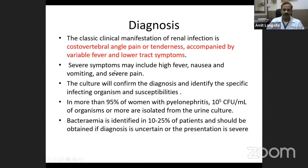Diagnosis involves pain in the flanks or costovertebral angle pain or tenderness, accompanied by fever and lower urinary tract symptoms like urgency, precipitancy, or severe burning during urination. It could also be associated with nausea, vomiting, and pain. A urine culture would most likely identify the bacteria and susceptible antibiotic. More than 95% of women with pyelonephritis have a colony count of 10^5 or more on urine culture, and 10 to 25% of these patients will also have bacteria in the blood, representing a severe form of pyelonephritis.